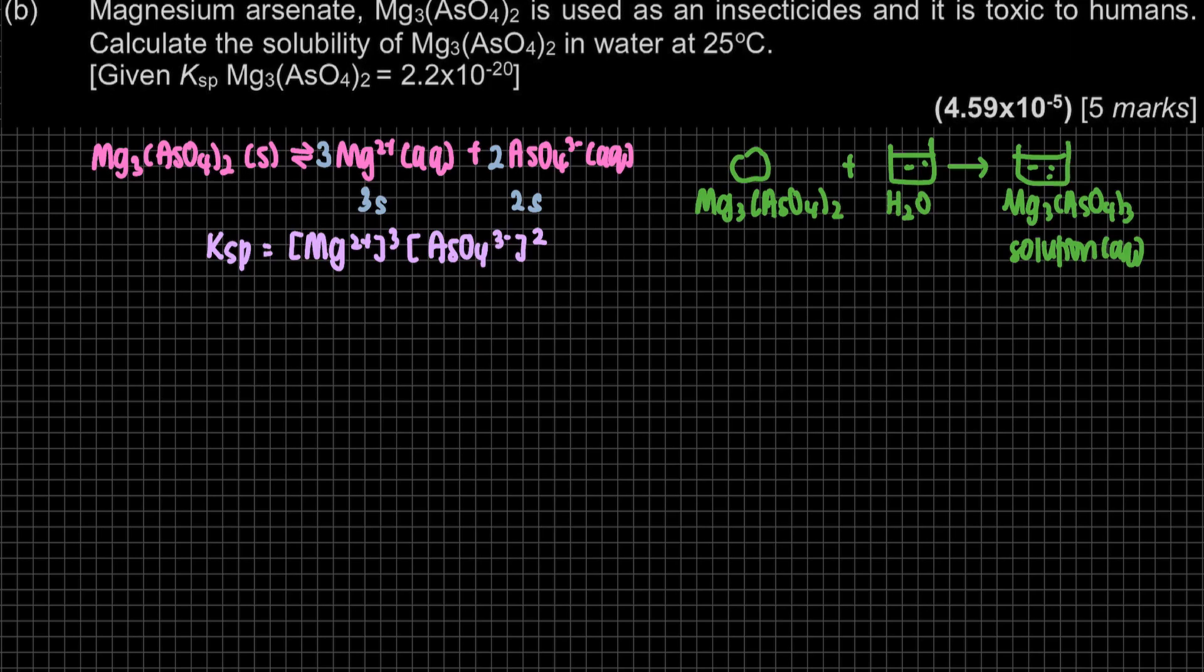Ksp is [Mg2+]^3. The coefficient will be to the power of. [AsO4]^2, the charges must be included in the bracket, the concentration. This stoichiometry will be to the power of. Then we can substitute the value. Ksp, this one. The Mg, this one. We do not know the value yet, but we can substitute here.